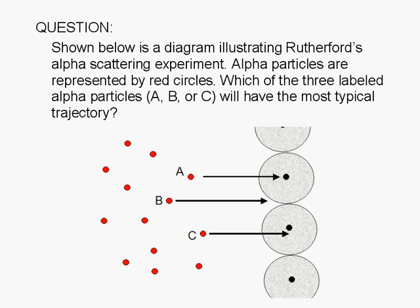Which of the three labeled alpha particles, A, B, or C, will have the most typical trajectory?